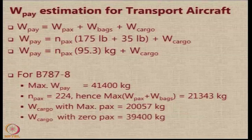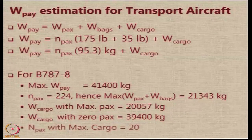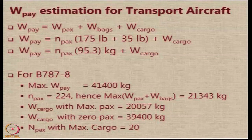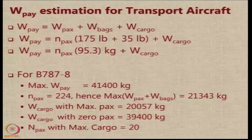If no passengers are carried and only cargo is loaded, the Boeing 787 can carry approximately 39 tons. If maximum cargo is carried, there is margin to carry only 20 passengers. So between 20 and 224 passengers, the number carried will vary depending on how much cargo the airline is carrying.